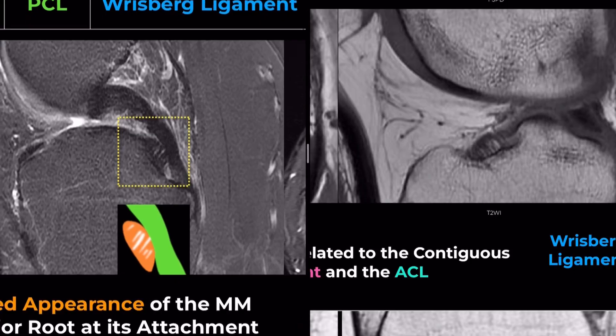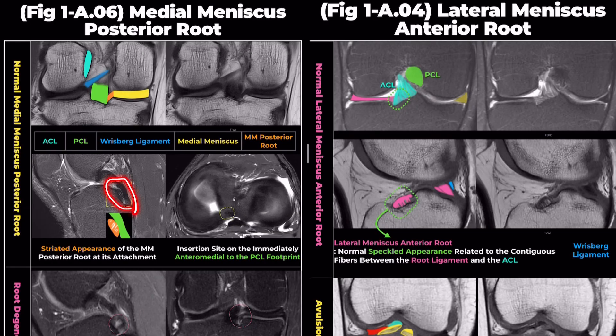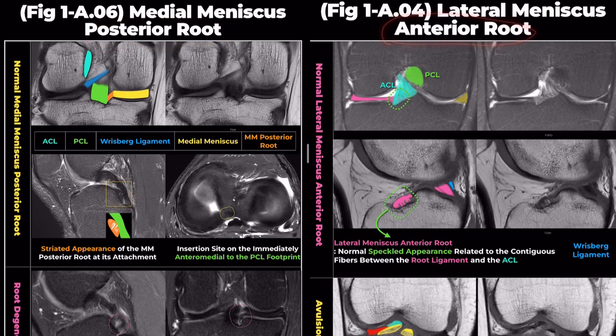This fissured appearance, seen in both the medial meniscus's posterior root and the lateral meniscus's anterior root, is a normal variation and should not be mistaken for a meniscal tear.